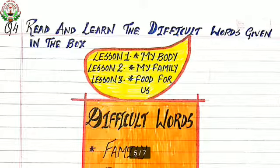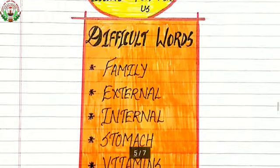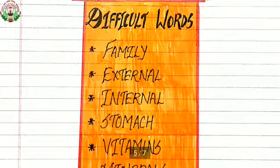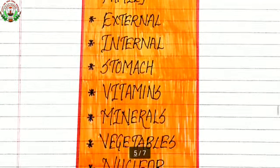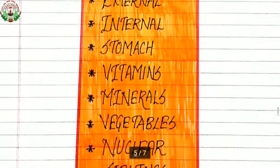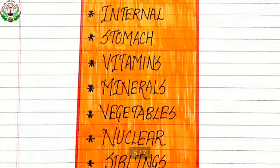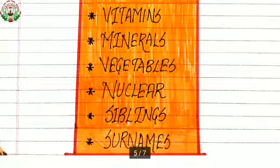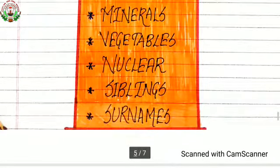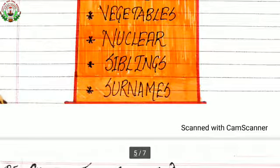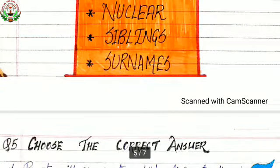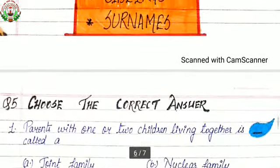Question number four, read and learn the difficult words given in the box from lessons one, two and three — My Body, My Family and Food for Us. The difficult words are: family, external, internal, stomach, vitamins, minerals, vegetables, nuclear, siblings, and surnames.